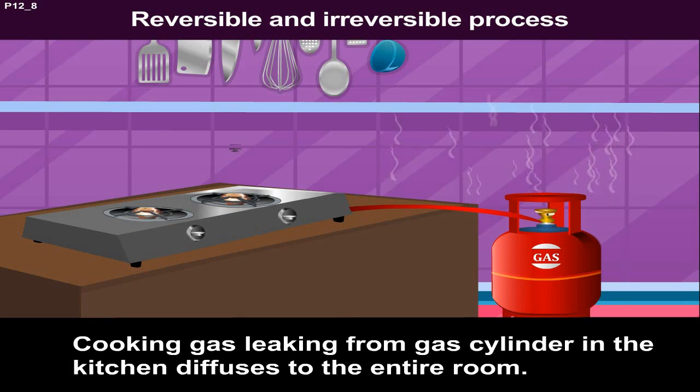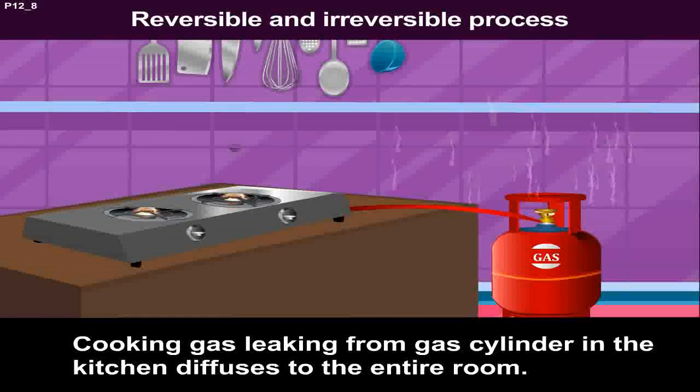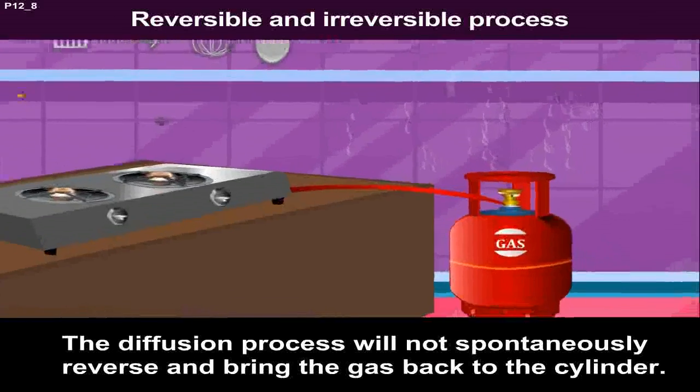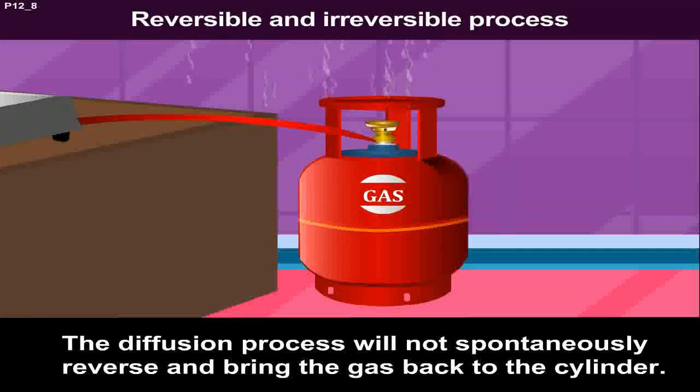Cooking gas leaking from a gas cylinder in the kitchen diffuses to the entire room. The diffusion process will not spontaneously reverse and bring the gas back to the cylinder.